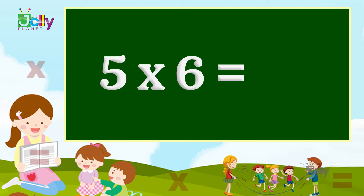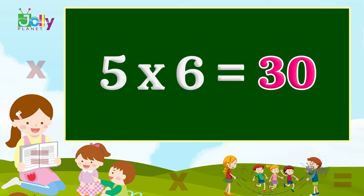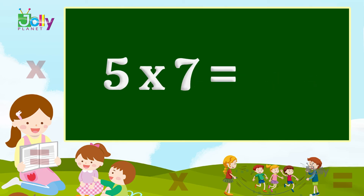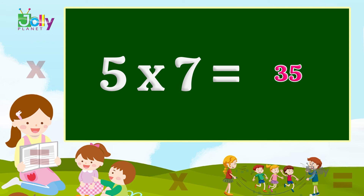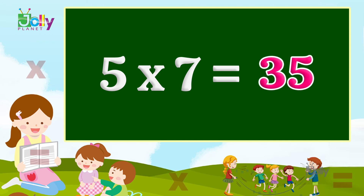Five fives are twenty-five. Five sixes are thirty. Five sixes are thirty. Five sevens are thirty-five. Five sevens are thirty-five.